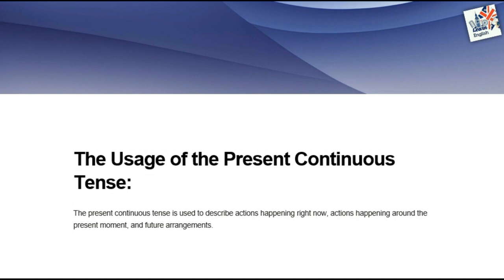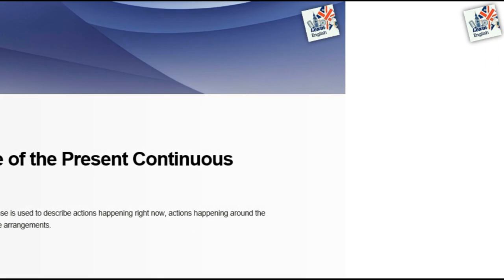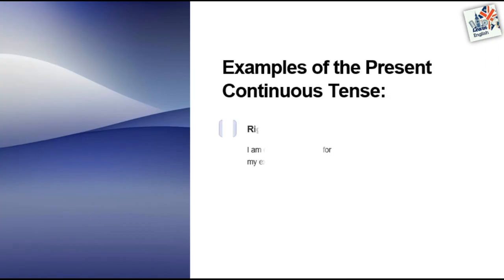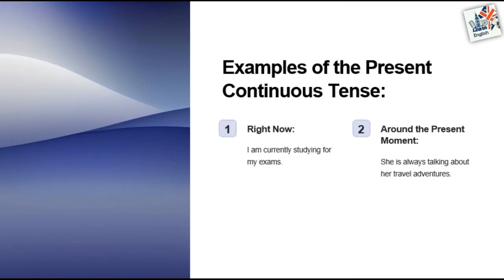The usage of the present continuous tense: the present continuous tense is used to describe actions happening right now, actions happening around the present moment, and future arrangements.